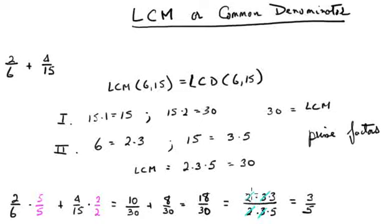Then cancel the common factors 2 and 3, and conclude that the sum of these two fractions is 3/5.